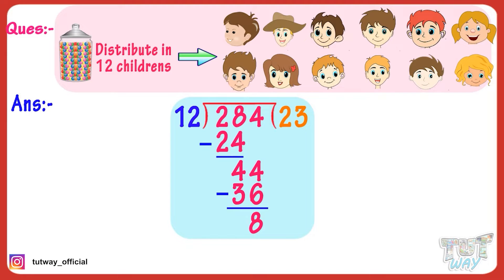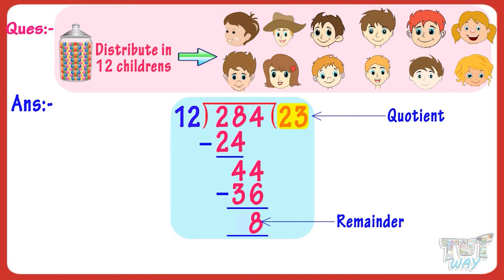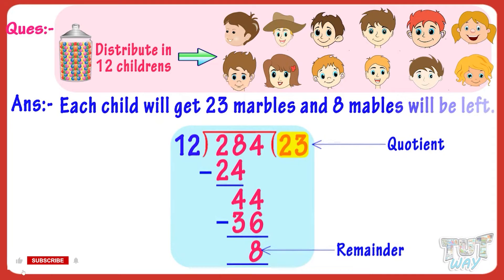Now, we have to divide 8 by 12. But 8 is less than 12 and all the digits in the dividend are divided now. No more digit is there to bring down. So, 8 is our remainder and 23 is our quotient. That is, if we divide 284 marbles among 12 children, each child will get 23 marbles and 8 marbles will be left.